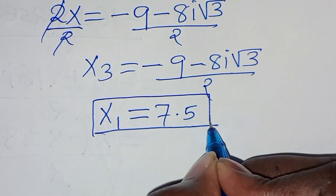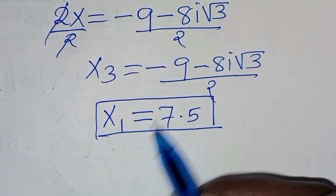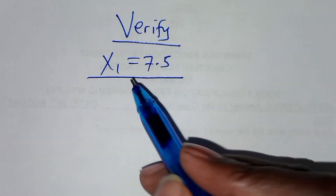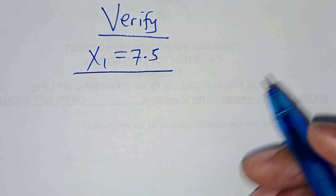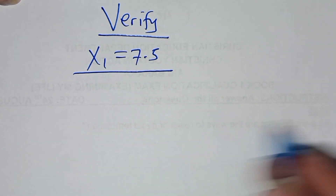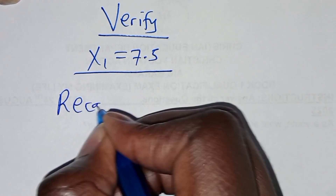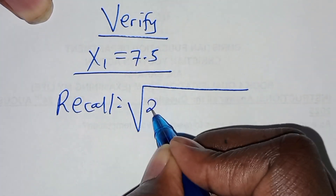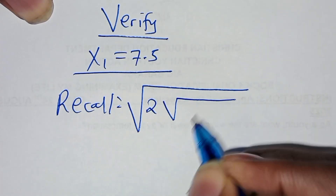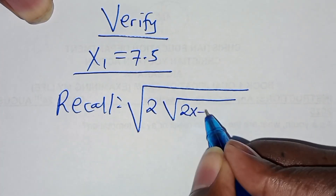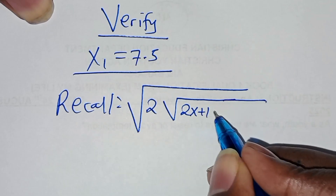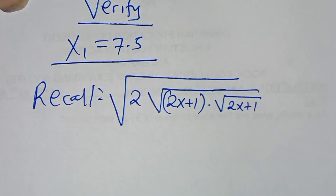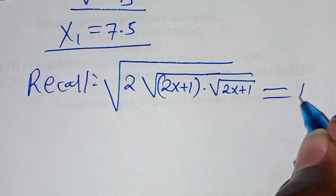The next step from here is to verify that x1 satisfies the equation. If you recall, we have that the square root of 2 multiplied by square root of 2x plus 1, multiplied by square root of 2x plus 1, should give us a value of 4.